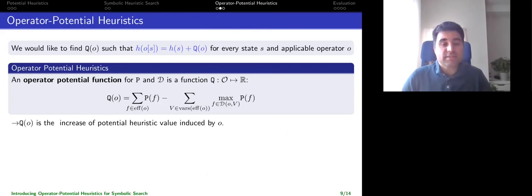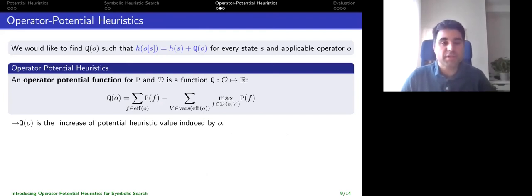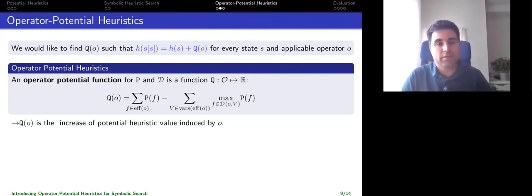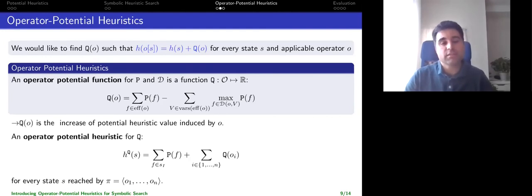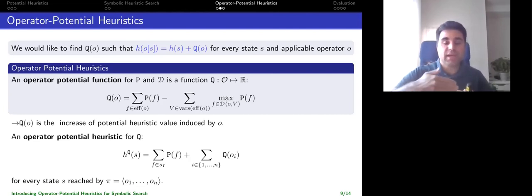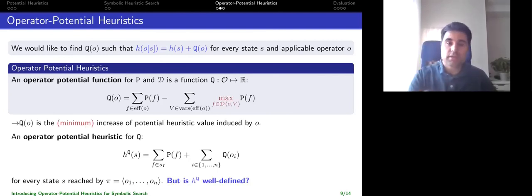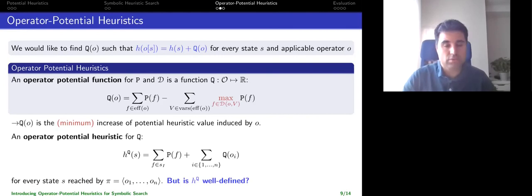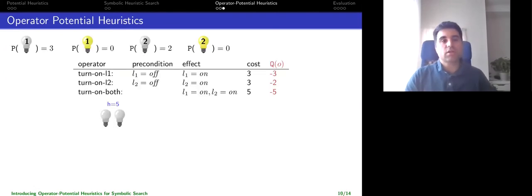For most heuristics it's not possible to categorize operators this way, but potential heuristics allow it. We define the operator potential as the change in heuristic value caused by applying that operator — exactly the difference between the potentials of facts added minus the potentials of facts deleted. The heuristic value of any state can then be computed by starting from the initial state's heuristic value and adding the operator potentials along the path. However, we need to take the maximum over preconditions to remain admissible, which causes a complication.